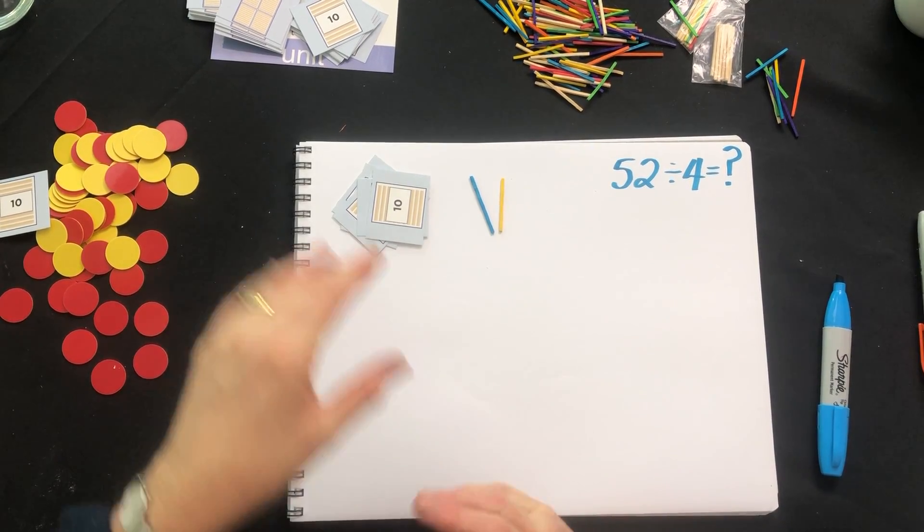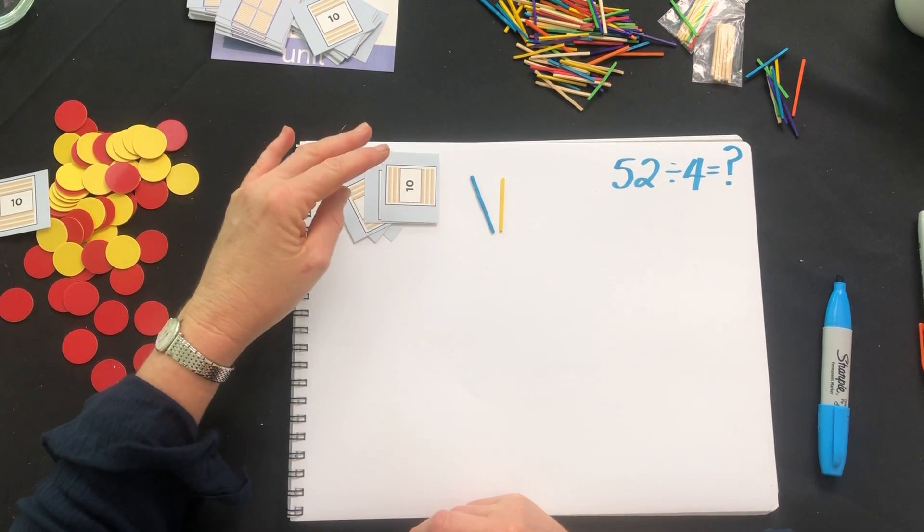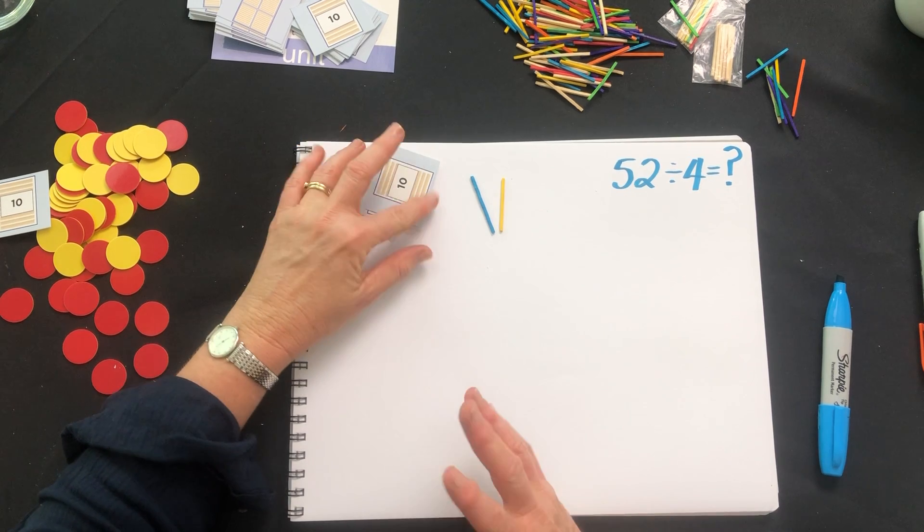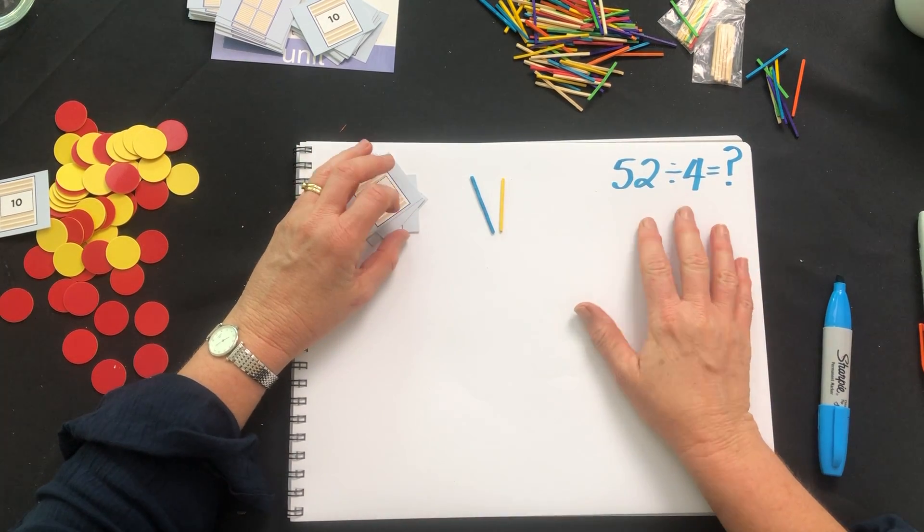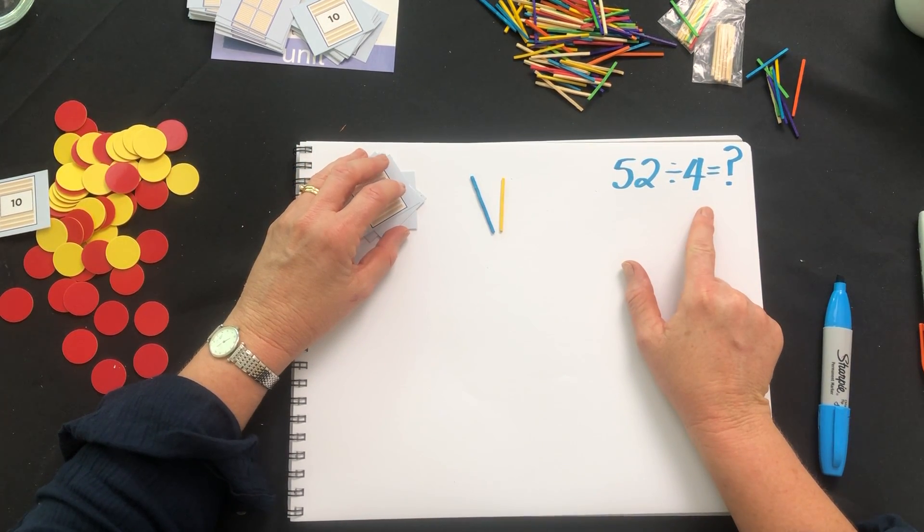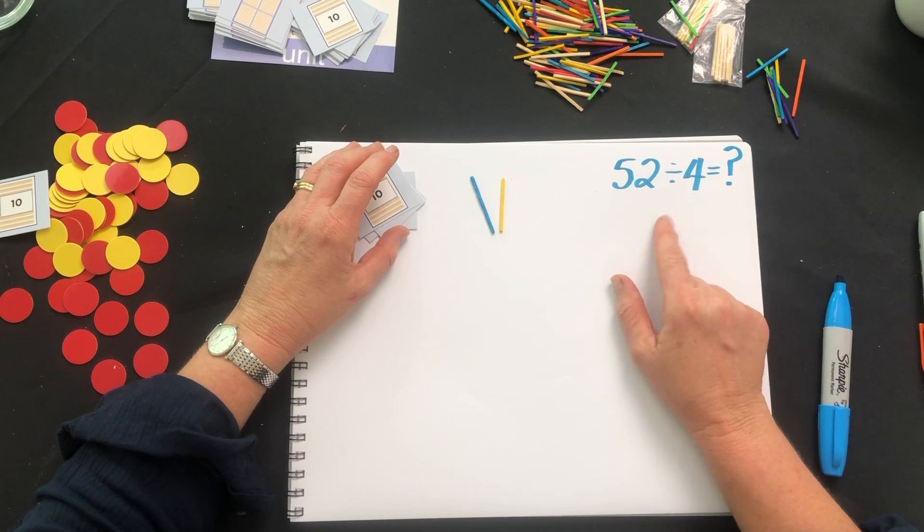Welcome to this video where we're going to have a look at how we can use visual representations and manipulatives to help students understand the process of dividing, in this case, 52 by 4.